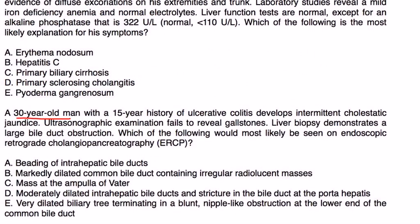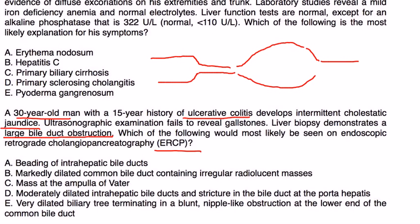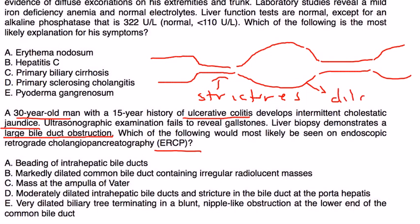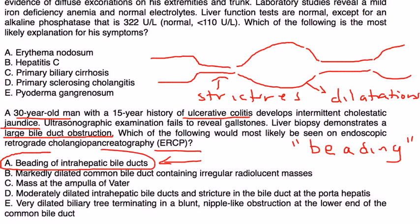A 30-year-old man with a 15-year history of ulcerative colitis develops intermittent cholestatic jaundice. Ultrasound fails to reveal gallstones, and liver biopsy shows large bile duct obstruction. On ERCP, you would see the characteristic strictures followed by dilatations — the beading pattern of intrahepatic bile ducts — which is the correct finding associated with PSC.